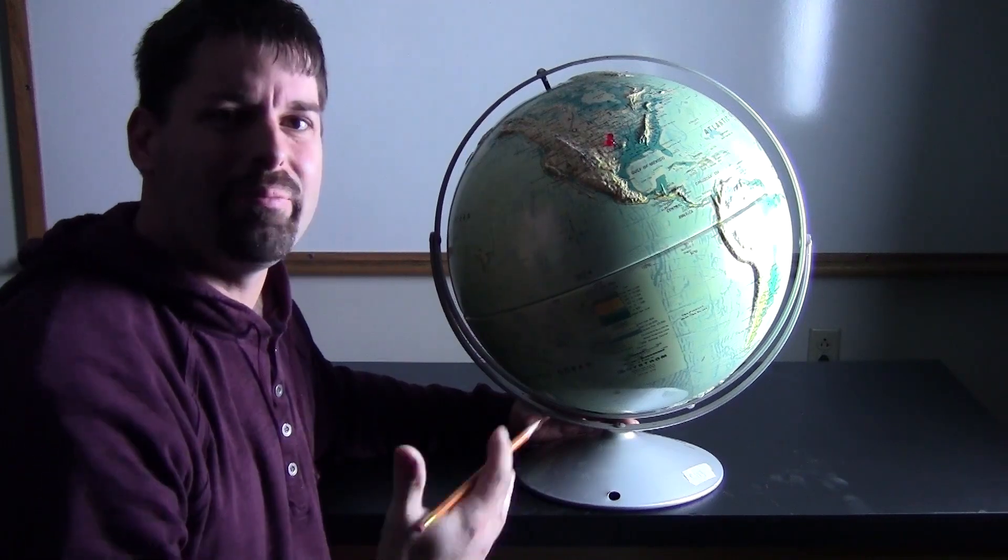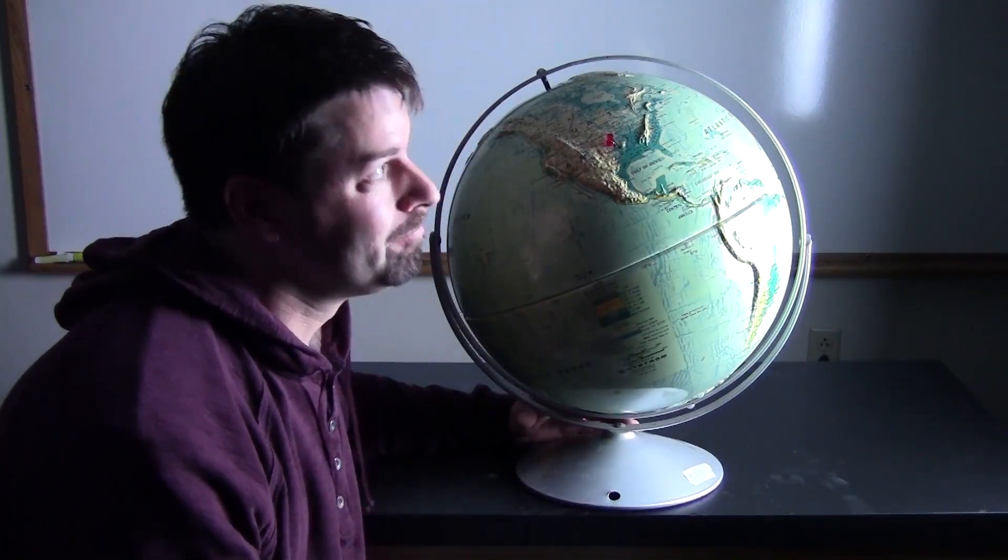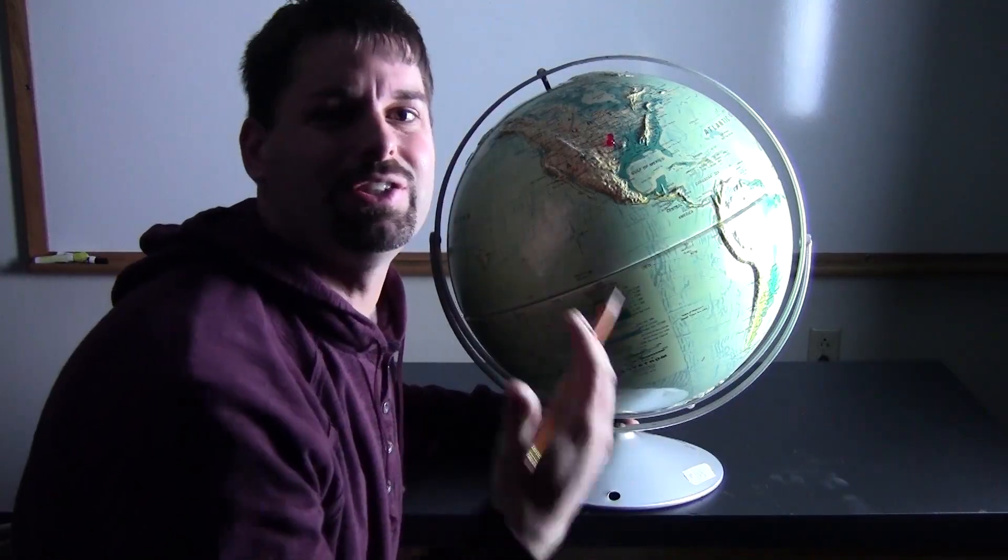It takes the Earth about 24 hours to make one complete spin. It looks like the Sun is moving across the sky, but we are the ones spinning.